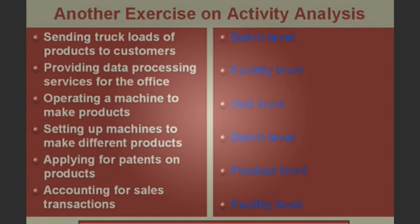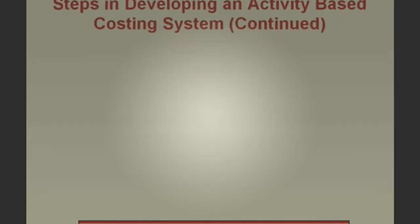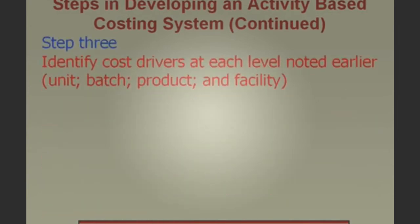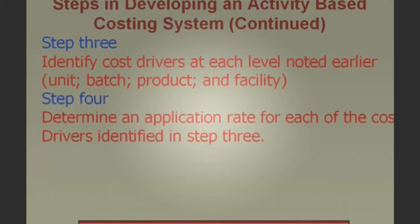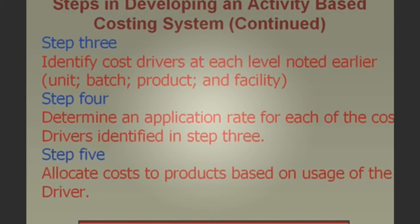Let's continue with the remaining steps in developing an ABC system. Step 3: identify cost drivers at each level — unit, batch, product, and facility. Step 4: determine an application rate for each of the cost drivers identified in Step 3. Step 5: allocate costs to products based on usage of the cost driver. Don't worry if this isn't fully clear yet — it'll become clear when we work a problem together.